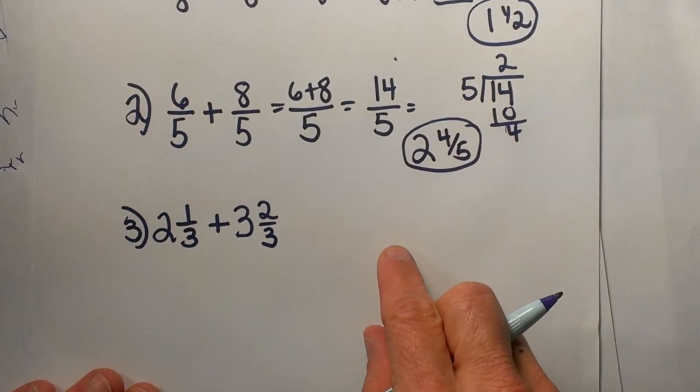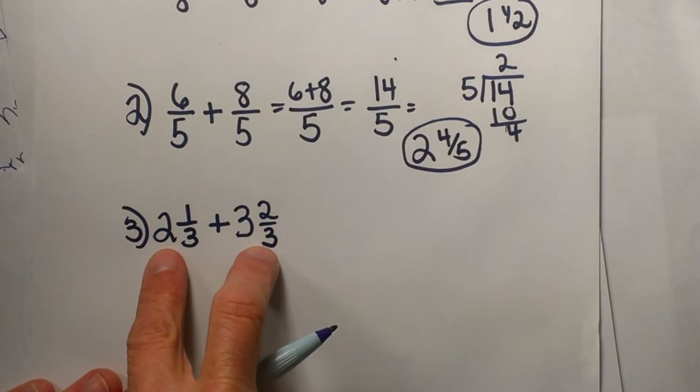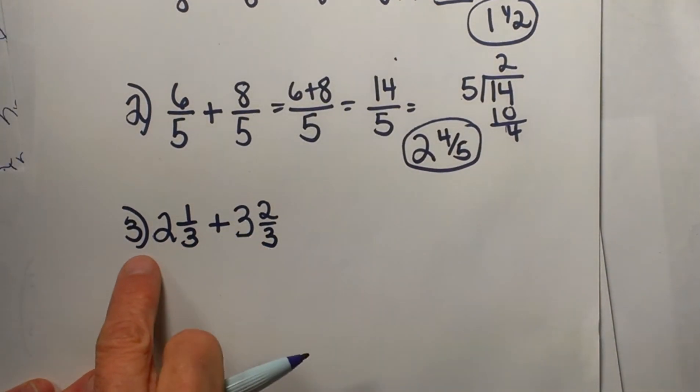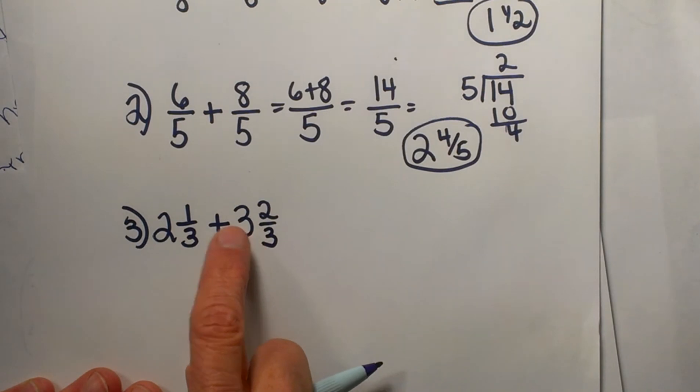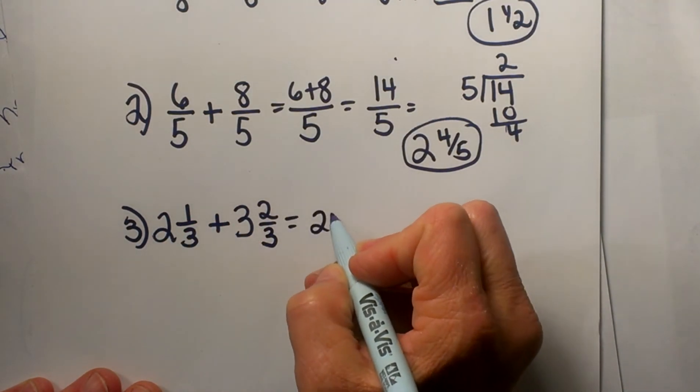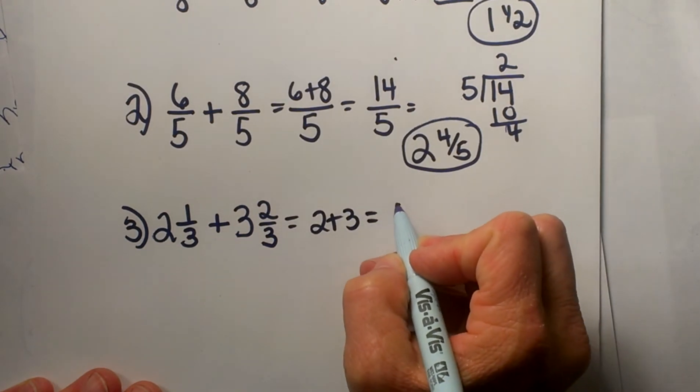Let's look at one more, and this time we are looking at common denominators with mixed numbers. Mixed numbers meaning I have a whole number and a fraction. The easiest thing to do with these is to go ahead and add your whole numbers. So let's add 2 plus 3 and we're going to get 5.